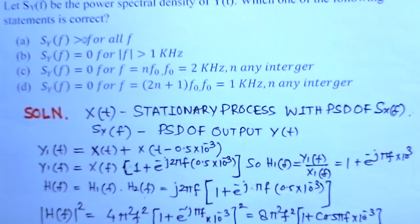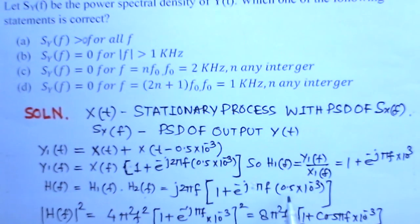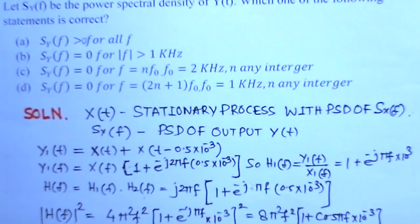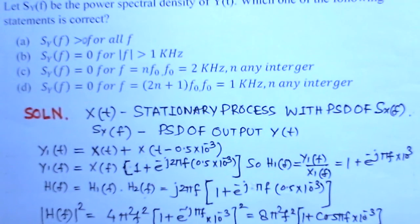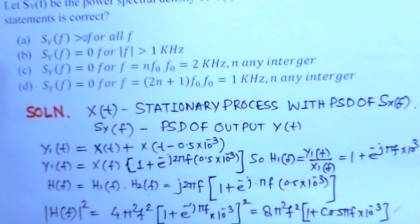This is j 2 pi f times 1 plus e to the power minus j pi f 0.5 times 10 to the minus 3. Then we get |H(f)|^2, which would be 4 pi^2 f^2 times 1 minus cosine term, giving us the simplified function.